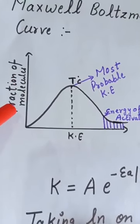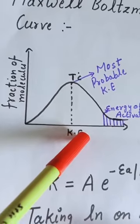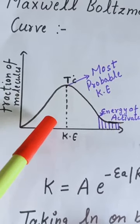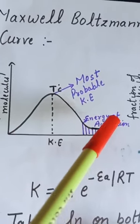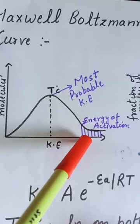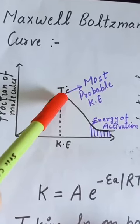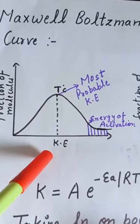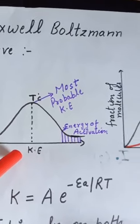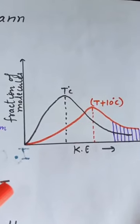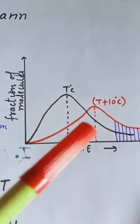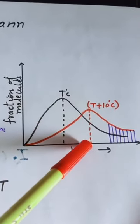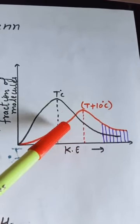This is the Maxwell-Boltzmann curve, which plots the fraction of molecules versus kinetic energy at temperature T°C. In this curve, there are very few molecules possessing very low kinetic energy and very few possessing very high kinetic energy. The maximum fraction of molecules possesses an intermediate energy known as the most probable kinetic energy. When we increase the temperature to T + 10°C, this curve shifts.